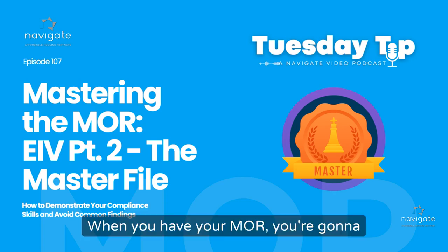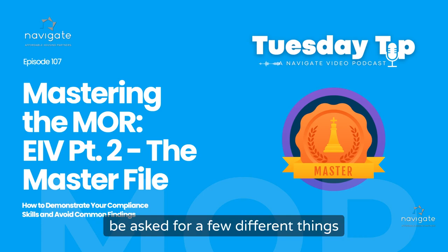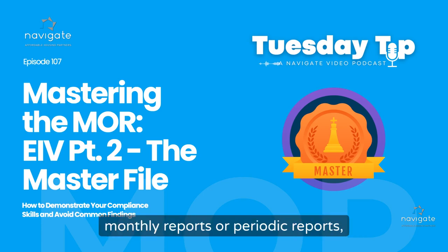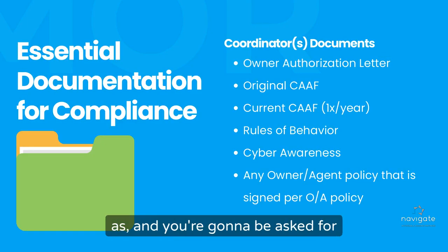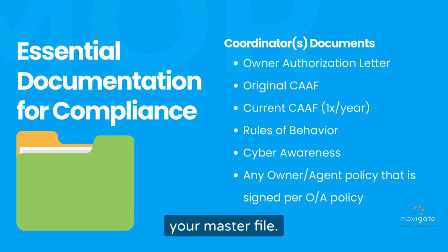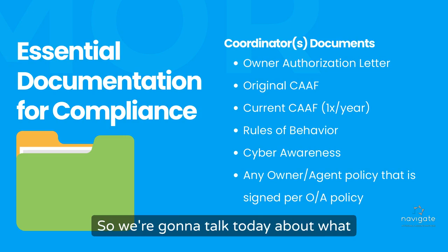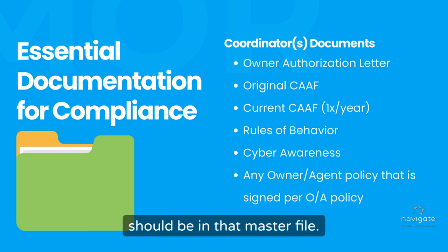When you have your MOR, you're going to be asked for a few different things for EIV. You're going to be asked for your monthly reports or periodic reports, whatever your policy has them run as. And you're going to be asked for your master file. So we're going to talk today about what should be in that master file.